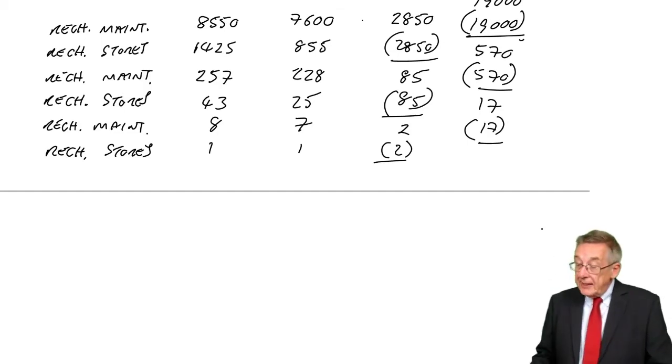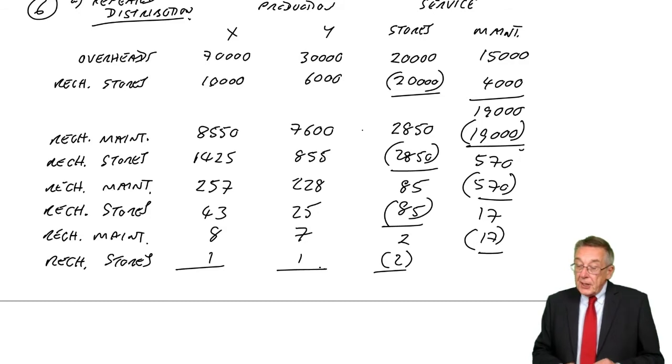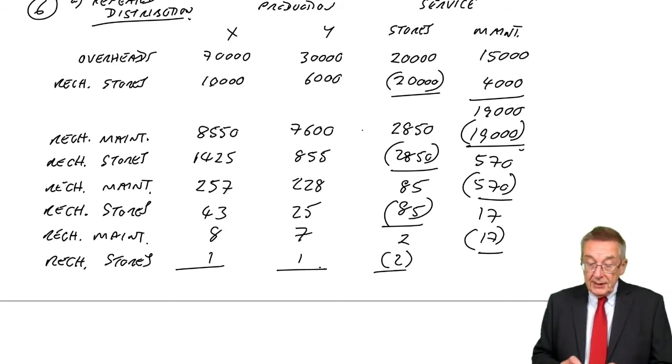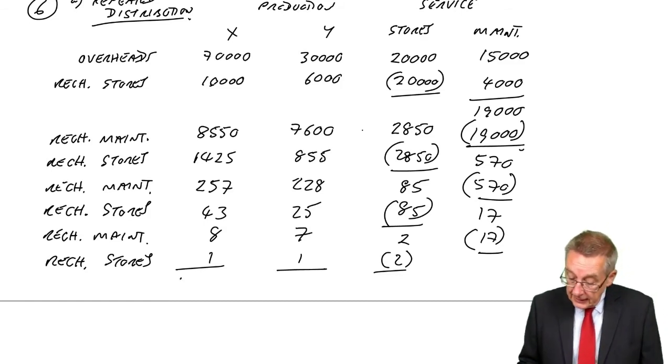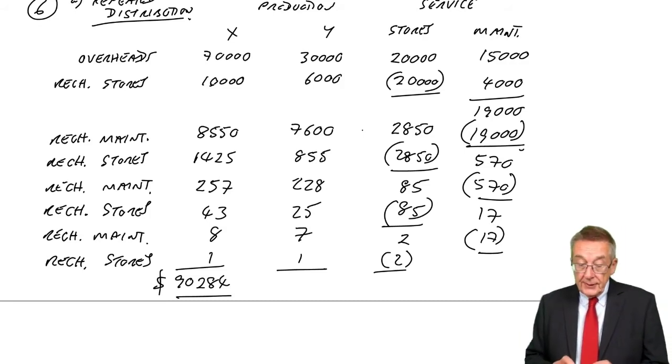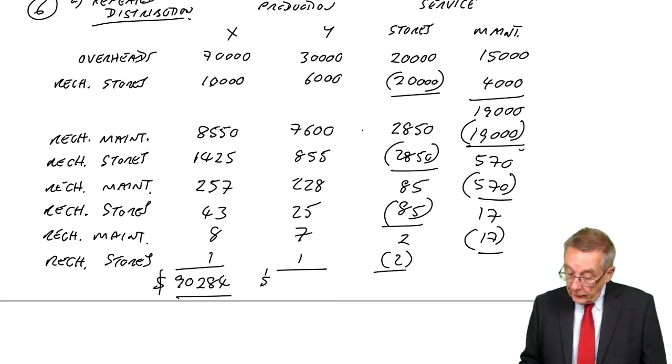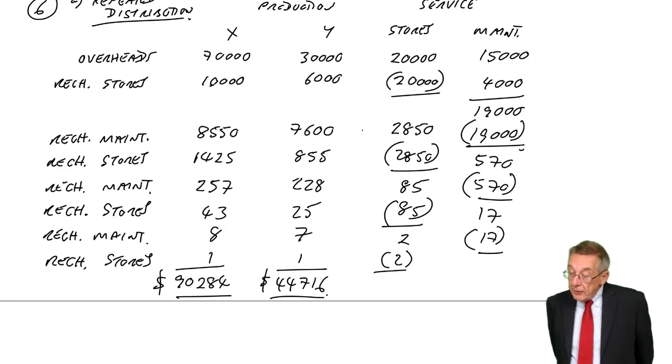So we've got rid of stores and maintenance completely. Let's now see what the final total is for X and for Y. Adding up the columns, for X: 70,000 plus 10,000, 8,550, 1,425, 257, 43, 8, and 1. I get 90,284. And for Y: 30,000, 6,000, 7,600, 2,850, 855, 228, 25, 7, and 1 gives 44,716. So that's the repeated distribution approach.